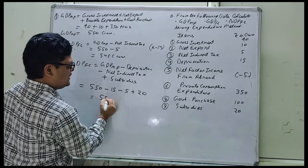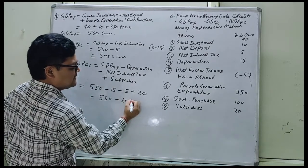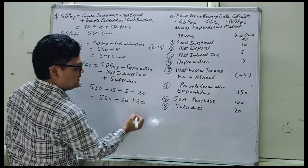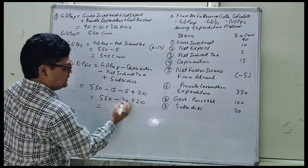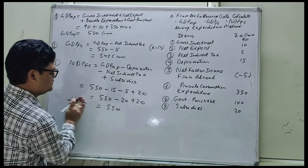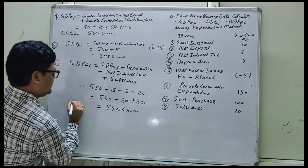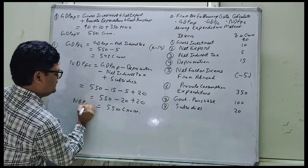It will become 550 minus 50 minus 5 plus 20. So it will become 515. NDP FC.